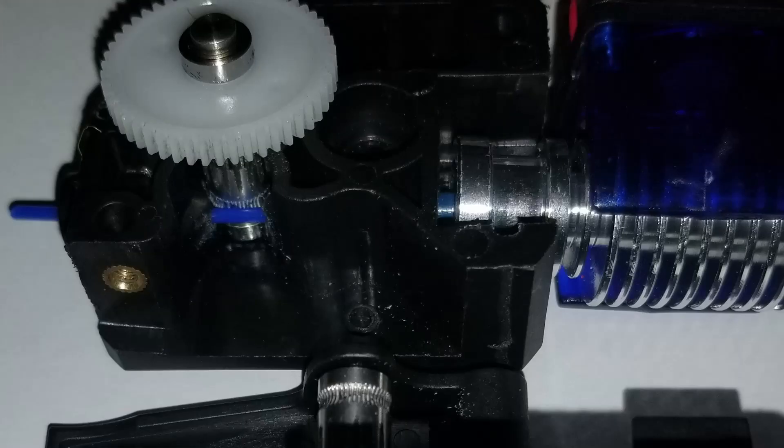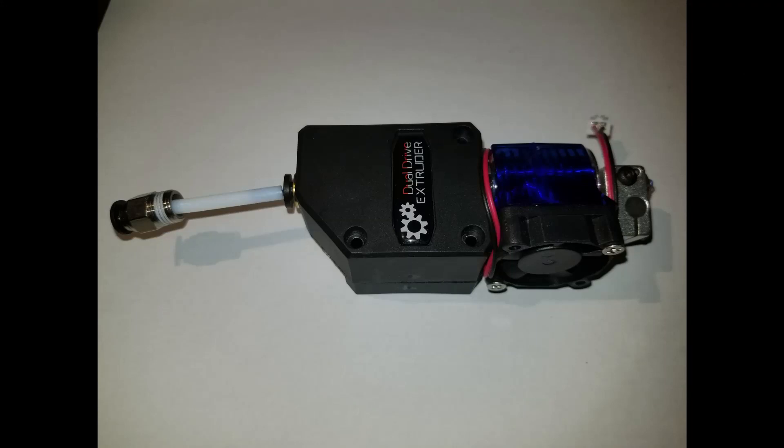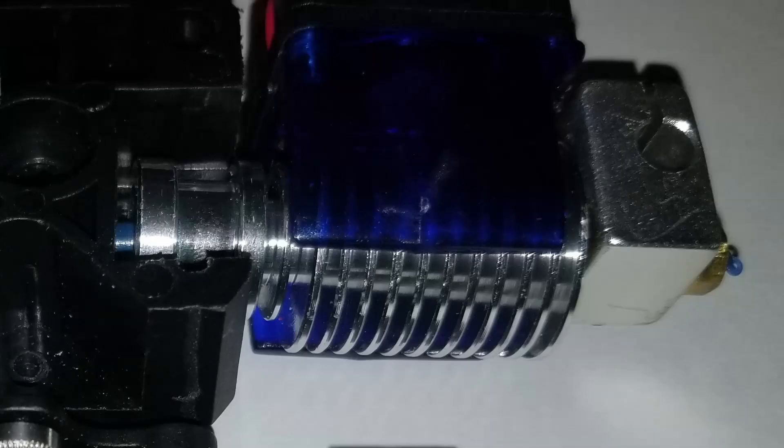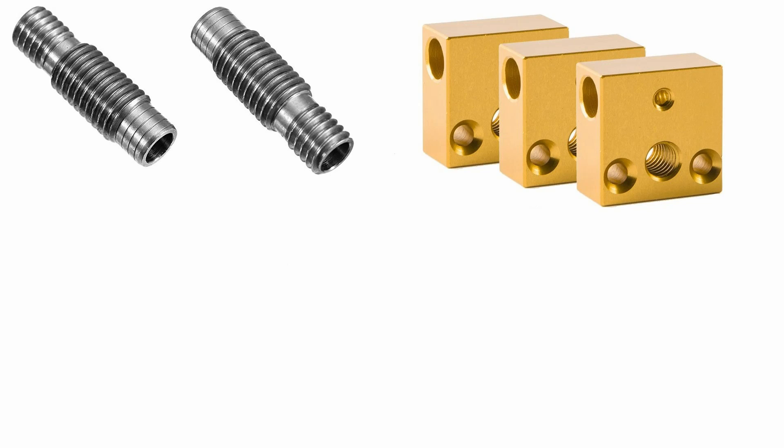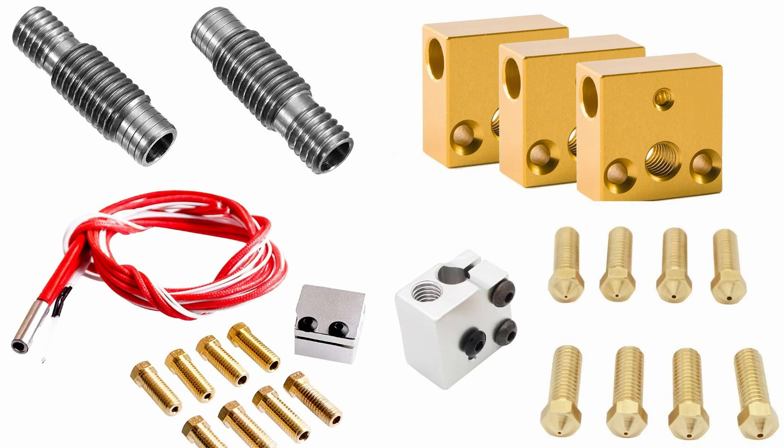The filament path components also include: the extruder gears and orifices in the extruder, the pneumatic fittings and the Bowden tube, the heat sink, the heat break throat, the heat block, the thermistor, and the nozzle. These are all components of the filament path.